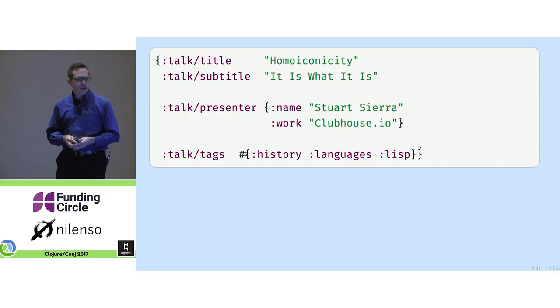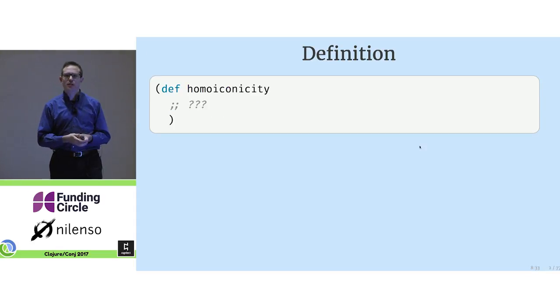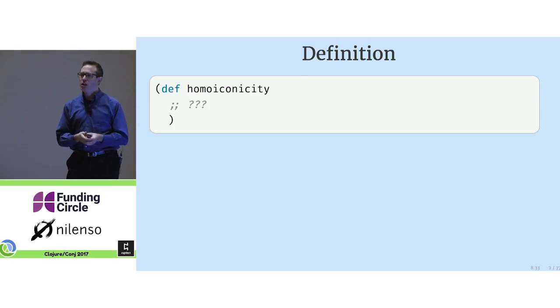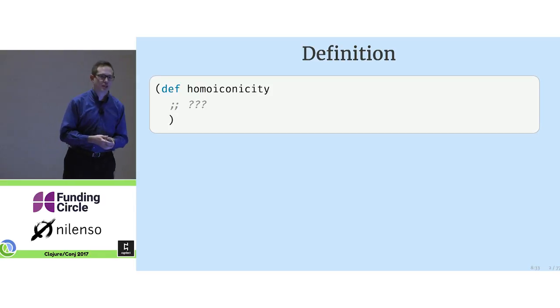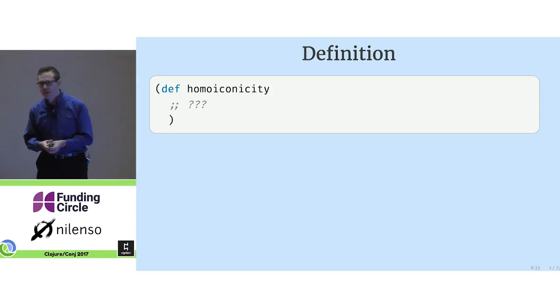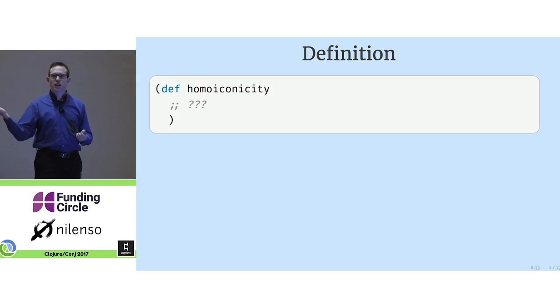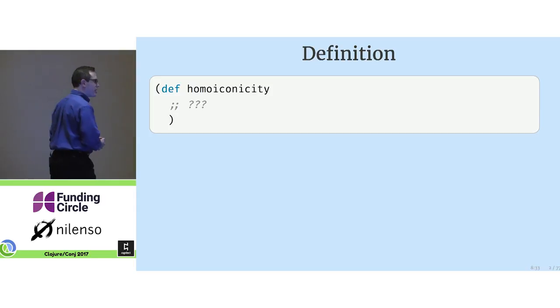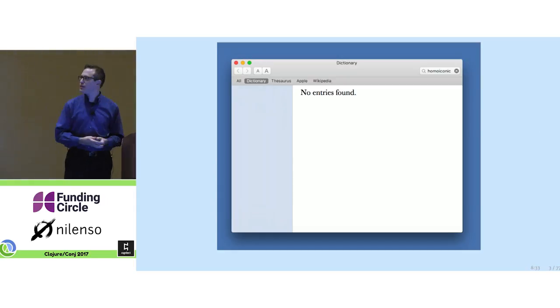Now, this being a Clojure conference talk, of course I need to start with a dictionary definition, so I typed homoiconicity into my dictionary and got nothing.